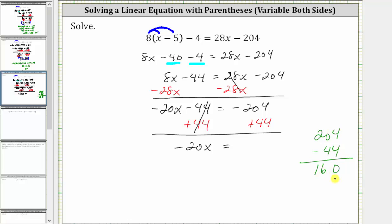The difference here is 160, but because the negative 204 had the larger absolute value, or because it outweighs the positive 44, this sum is negative 160.